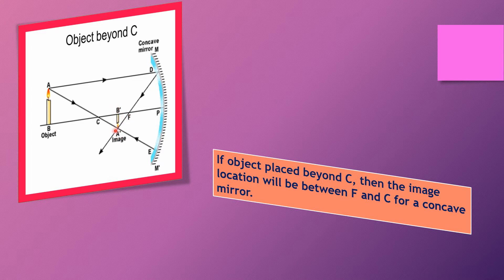So this is the object and this is the image, labeled A-dash B-dash.